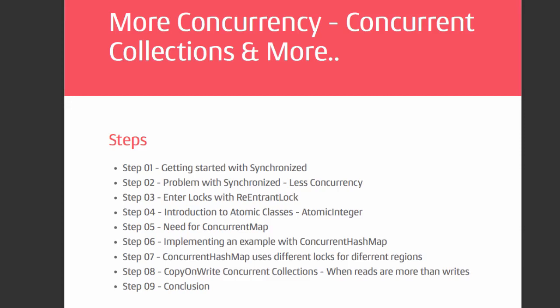Welcome to this new section where we will discuss a lot of things about concurrency. While we talked about threads, we talked about synchronized, and that's the only approach we discussed until now about concurrency. In this section, we will explore something called locks, look at implementations of atomic operations like AtomicLong and AtomicInteger, and also be introduced to some of the important concurrent collections. We'll talk about ConcurrentHashMap, CopyOnWriteArrayList, CopyOnWriteArraySet, and things like that.